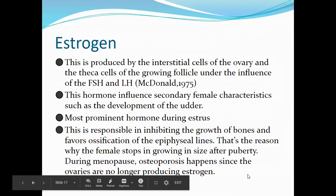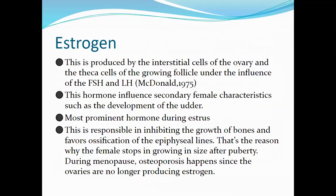Estrogen influences secondary female characteristics and is the most prominent hormone during estrus. It is responsible for inhibiting the growth of bones and favors ossification of the epiphyseal lines — that's the reason why females stop growing when they hit puberty. During menopause, osteoporosis happens since the ovaries are no longer producing estrogen.